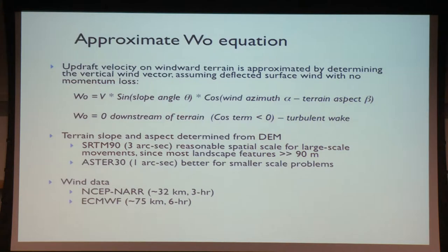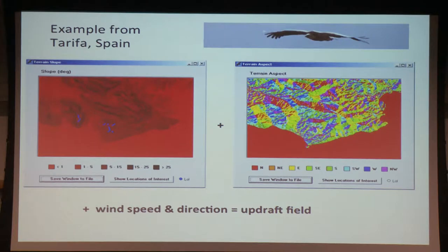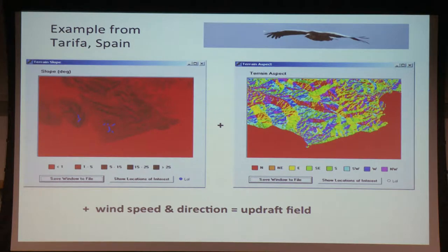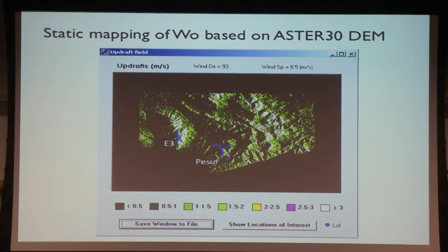Here's a quick example from southern Spain. The map on the left shows slope; the right shows terrain aspect. Combining those fields with a wind field generates the output. In that part of the world, the dominant winds are either east or west — it typically blows east or west with not much in between.